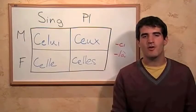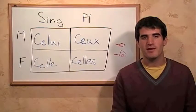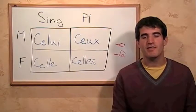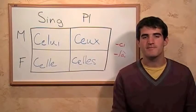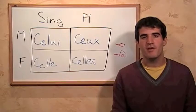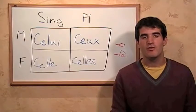Demonstrative pronouns are words that we use to refer to or demonstrate something specific. In English, we usually use phrases like 'this one' or 'those ones.' And in French, we have specific words for these. These are different from demonstrative adjectives, which have to modify another noun.